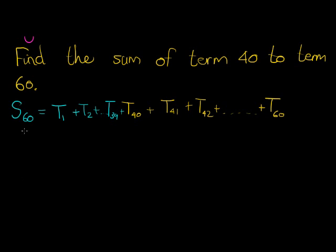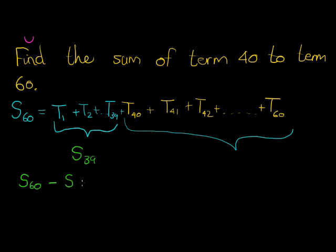But look at something very interesting here. If I take the first 60 terms and I remove these terms, then I'll have term 40 to term 60. What are the terms that I'm removing? Well, it's the first 39 terms added up together. So this is S39. So to find the sum of terms 40 to term 60, I need to take the sum of all the terms up to 60 minus the sum of the first 39 terms.